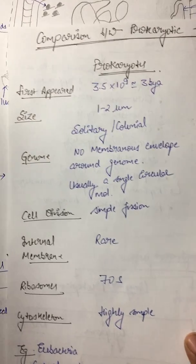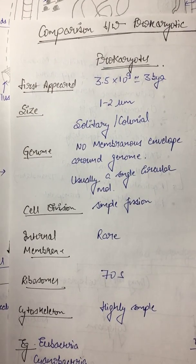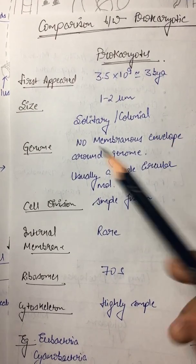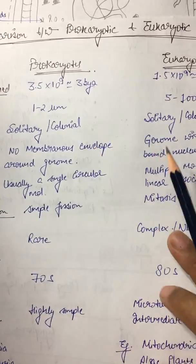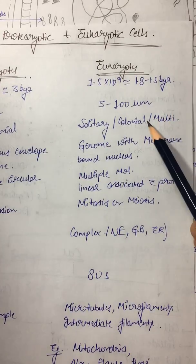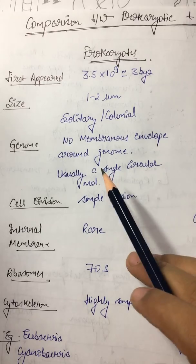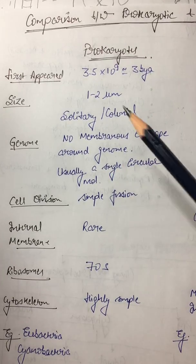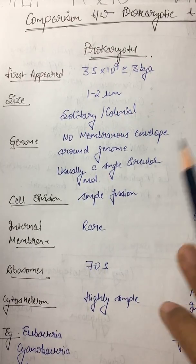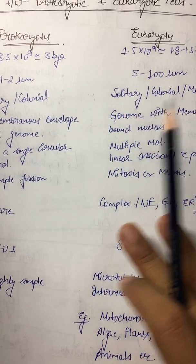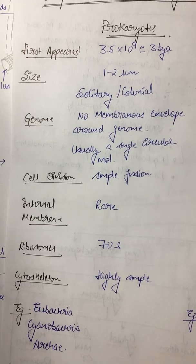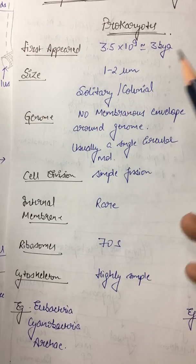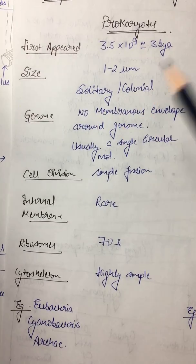Number one, we are going to talk in terms of appearance. First, prokaryotes appeared approximately 3 billion years ago and eukaryotes 1.8 to 1.5 billion years ago. Now size: the size of prokaryotes is 1 to 2 micrometers, the size of eukaryotes is 5 to 100 micrometers. Generally prokaryotes are solitary or two or many prokaryotes come together to form a colony.